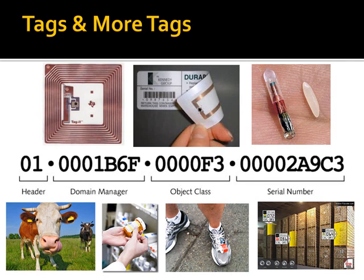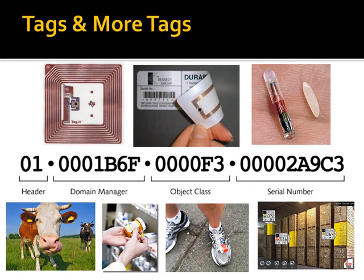Thinking through what we talked about today: you're going to choose a combination of frequency, reading technology, and data format to meet the needs of your application. If I'm simply identifying cows in a herd, I really don't need much information — just a unique identifier. If I want to store weight history, vaccinations, and that sort of thing, then I need a more complex tag and more complex systems to be able to write that information.